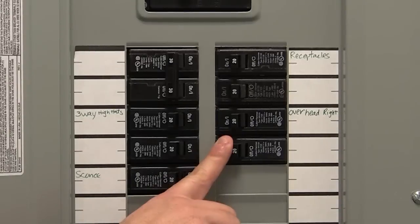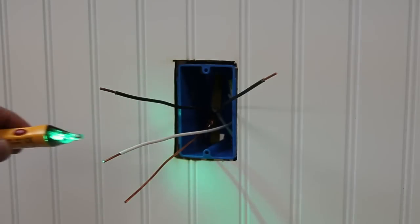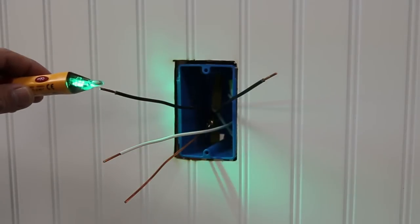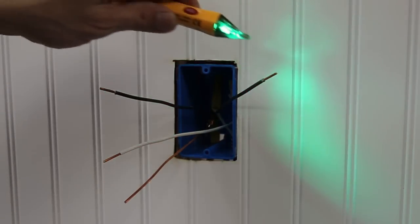Once identified, turn off the circuit breaker to shut power and test to ensure that the power is off. Use a small piece of electrical tape to label the hot wire.